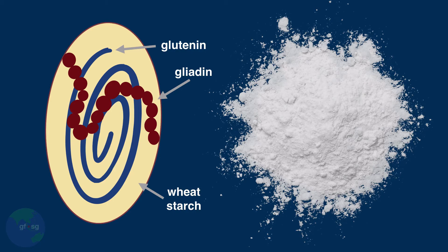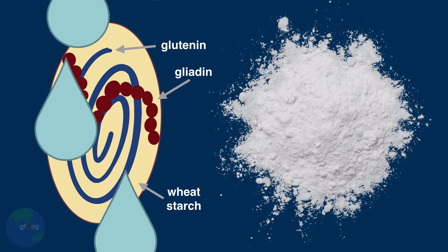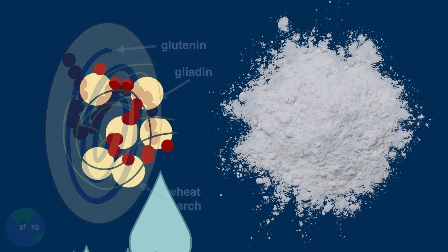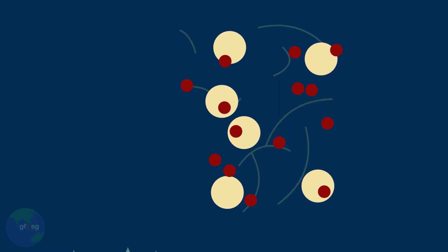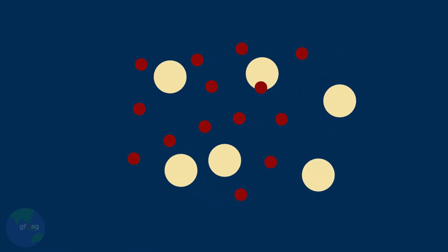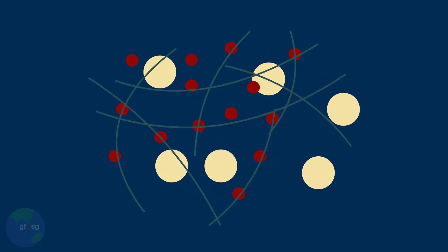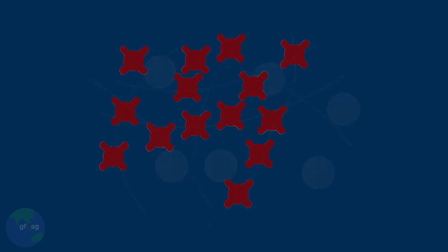Notice that neither of these is actually called gluten. When liquid is added to wheat flour, the glutenin and gliadin begin to unwind themselves and let go of the starch molecule. As the flour is kneaded or mixed, the water, glutenin, and gliadin begin to chemically interact and literally stick together. The bond that forms between them is gluten.